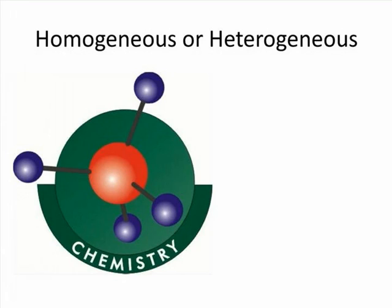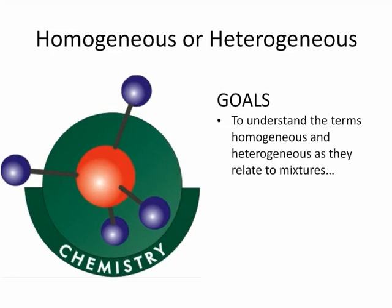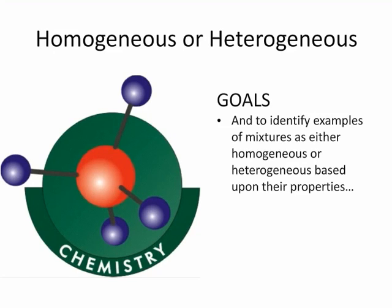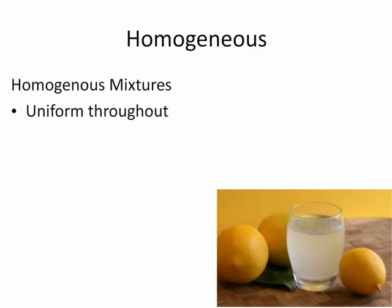In class today, we talked about two vocab words from Chapter 1: homogeneous and heterogeneous mixtures. The goal for this review is for you to understand the terms homogeneous and heterogeneous as they relate to mixtures, and to identify examples of mixtures as either homogeneous or heterogeneous based upon their properties.